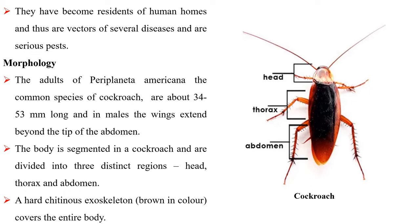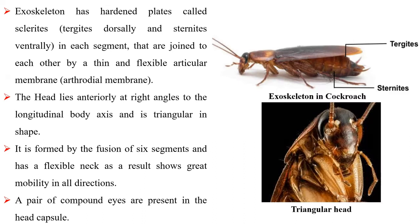The body is segmented in the cockroach and is divided into three distinct regions: head, thorax and abdomen. A hard chitinous exoskeleton covers the entire body. The exoskeleton has hardened plates called sclerites in each segment that are joined to each other by a thin and flexible articular membrane. The head lies anteriorly at right angles to the longitudinal body axis and is triangular in shape. It is formed by the fusion of six segments and has a flexible neck, as a result shows great mobility in all directions.